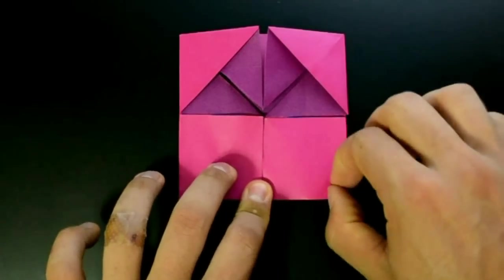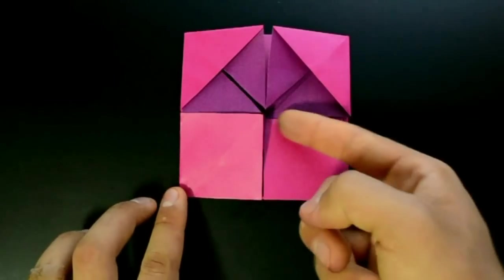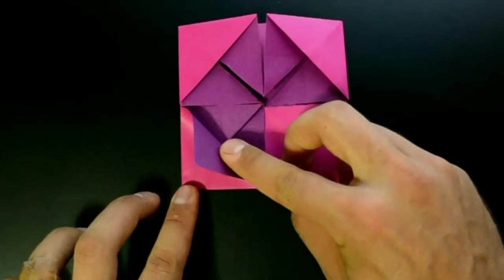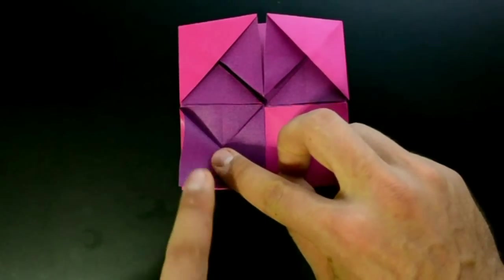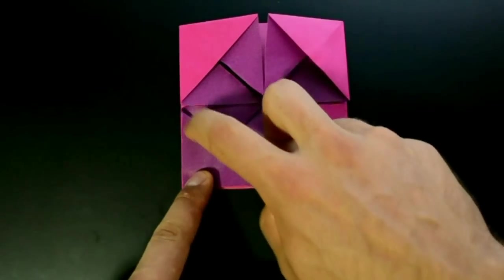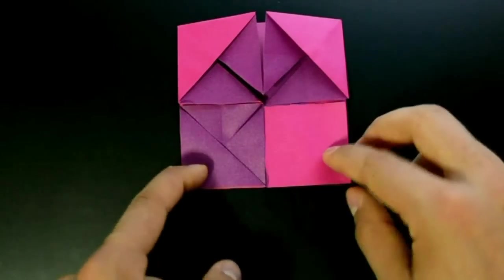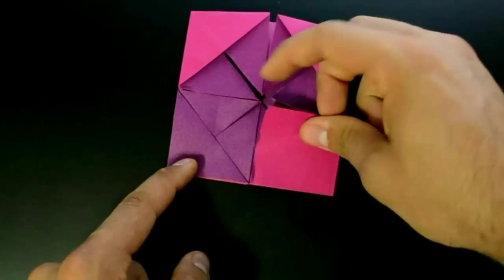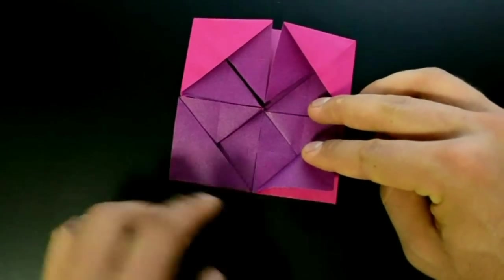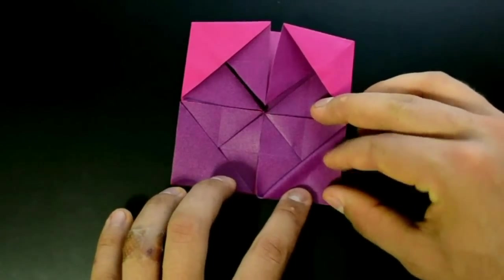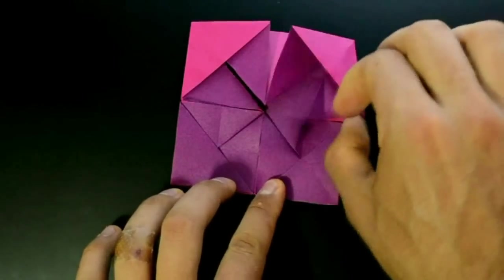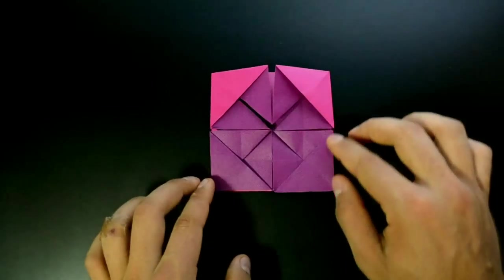Fold in half diagonally these two squares here. Touching the corners. On the center we have four corners.